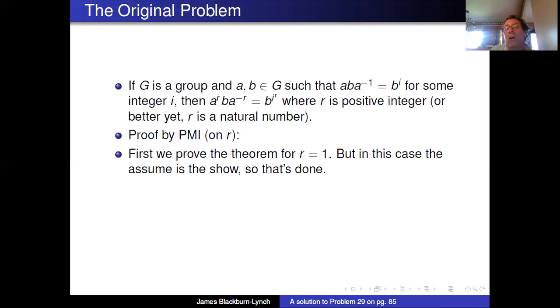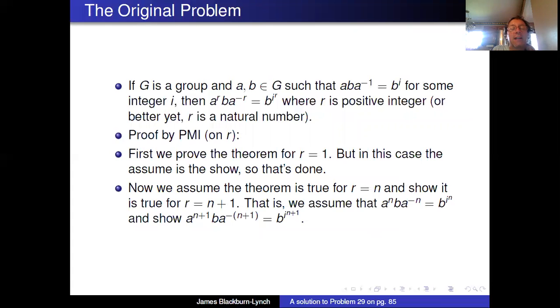So first we prove the theorem for r = 1. But again, same as before, if you look at r equals one in what we're trying to show, that's a^1 ba^(-1) = b^i, which is literally the assumption. So again, nothing to do in the first case.